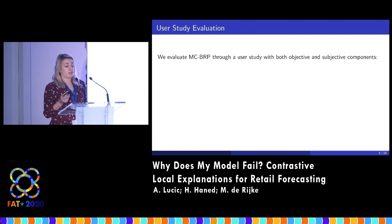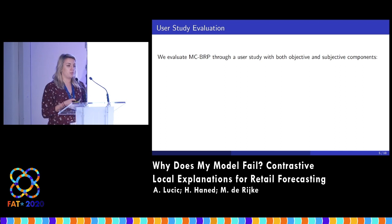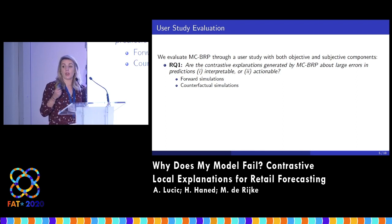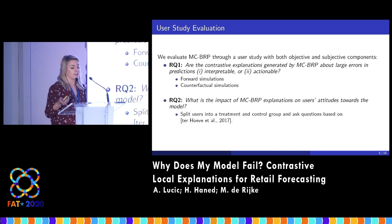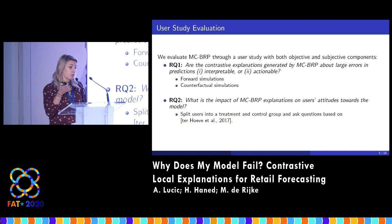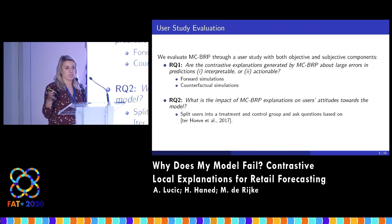We evaluate this through a user study with 75 participants, both in objective and subjective ways. Our first research question is the objective component — we want to know if our contrastive explanations are interpretable and actionable, and we do this through forward and counterfactual simulations. The second evaluation is in subjective terms to see what the impact of our explanations is on users' attitudes towards the model. We split users into a treatment group which receives the explanations and a control group which doesn't, and ask them the same set of subjective questions before and after conducting the tasks.